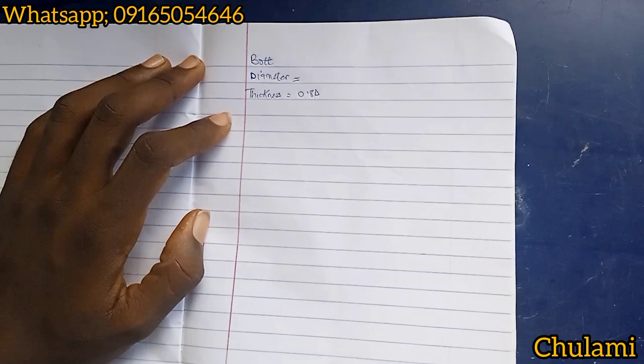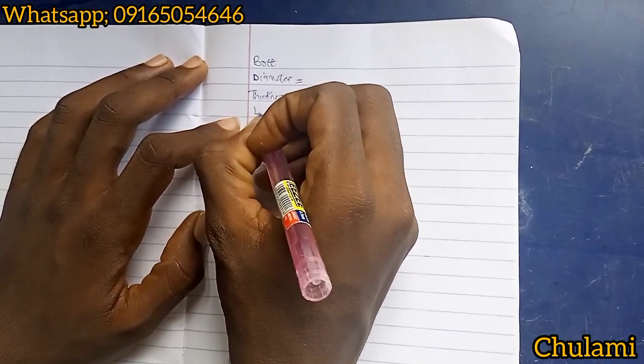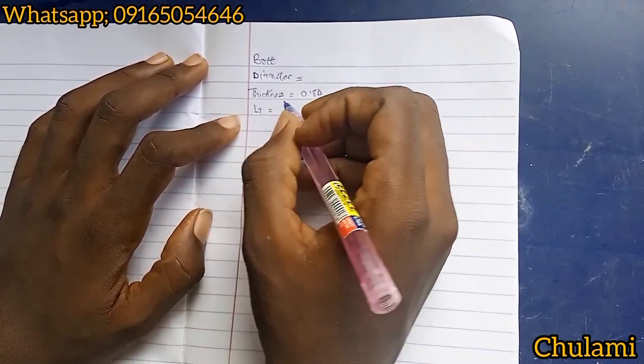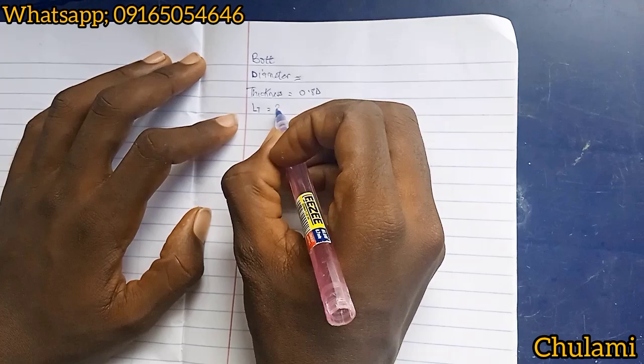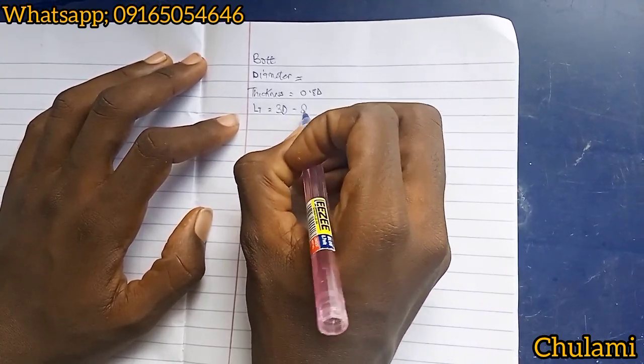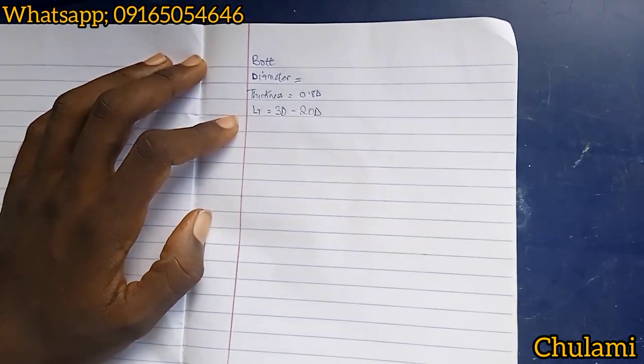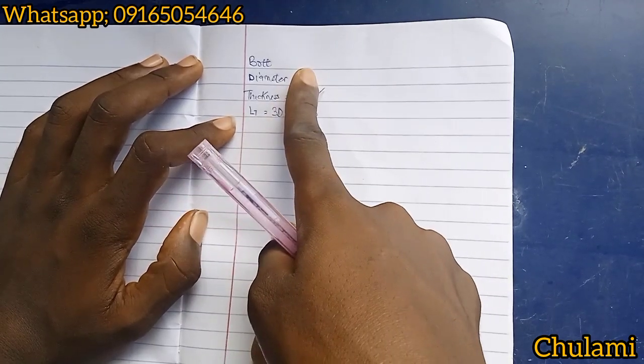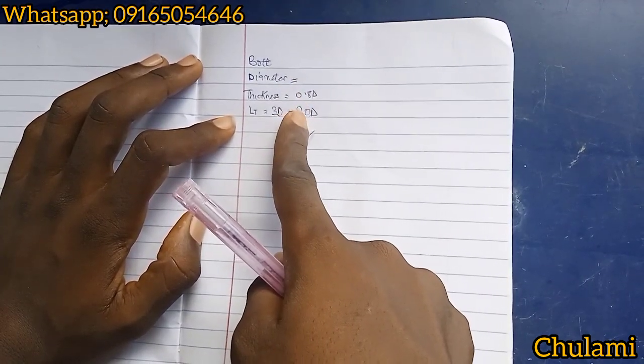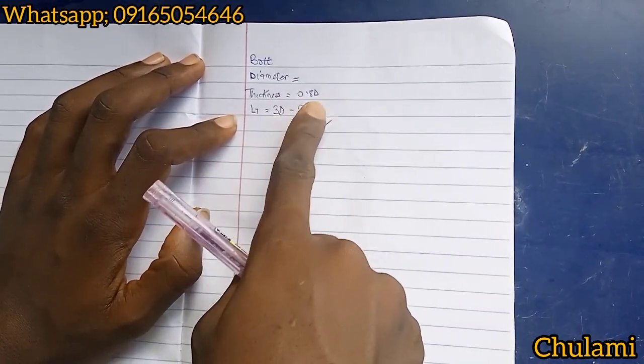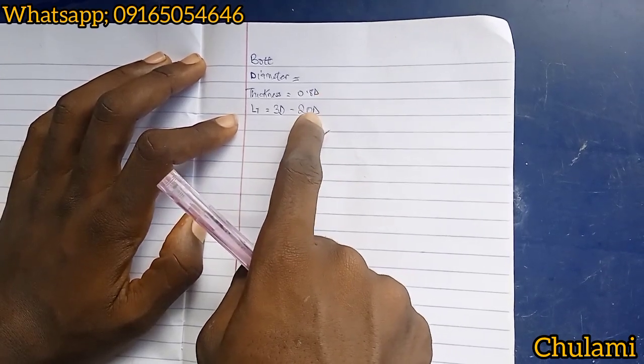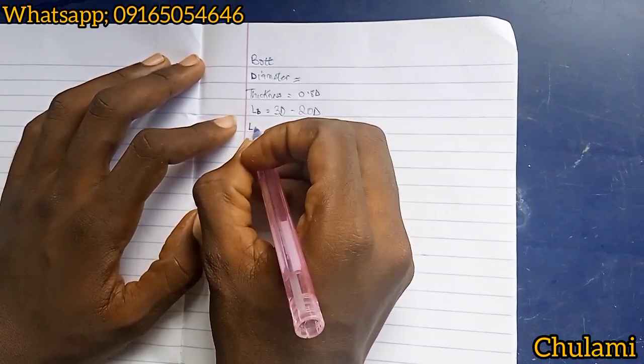Then our length of bolts. Now there's a range of length of bolts - it's between 3d to 20d. That is, the length of a bolt should fall within 3 times diameter to 20 times diameter. It must fall within this range, and mind you this d here means diameter.